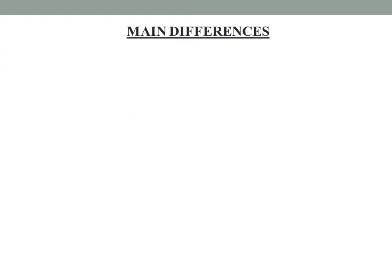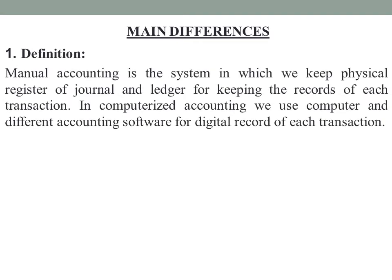Let's look into some of the main differences between manual accounting and computerized accounting. First, in the case of definition: manual accounting is the system in which we keep a physical register of journal and ledger for keeping the records of each transaction. Whereas in computerized accounting, we use a computer and different accounting software for the digital record of each transaction.